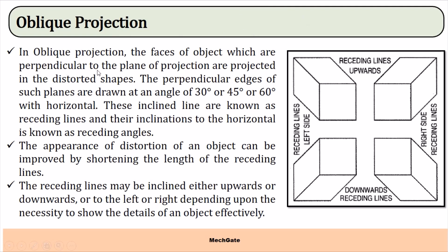In oblique projection, the faces of the object which are perpendicular to the plane of projection are projected in a distorted shape. The perpendicular edges of such a plane are drawn at an angle of 30, 45, or 60 degrees. These inclined lines are known as residing lines and their inclination to the horizontal is known as the residing angle. The distortion can be reduced by shortening the length of the residing lines.